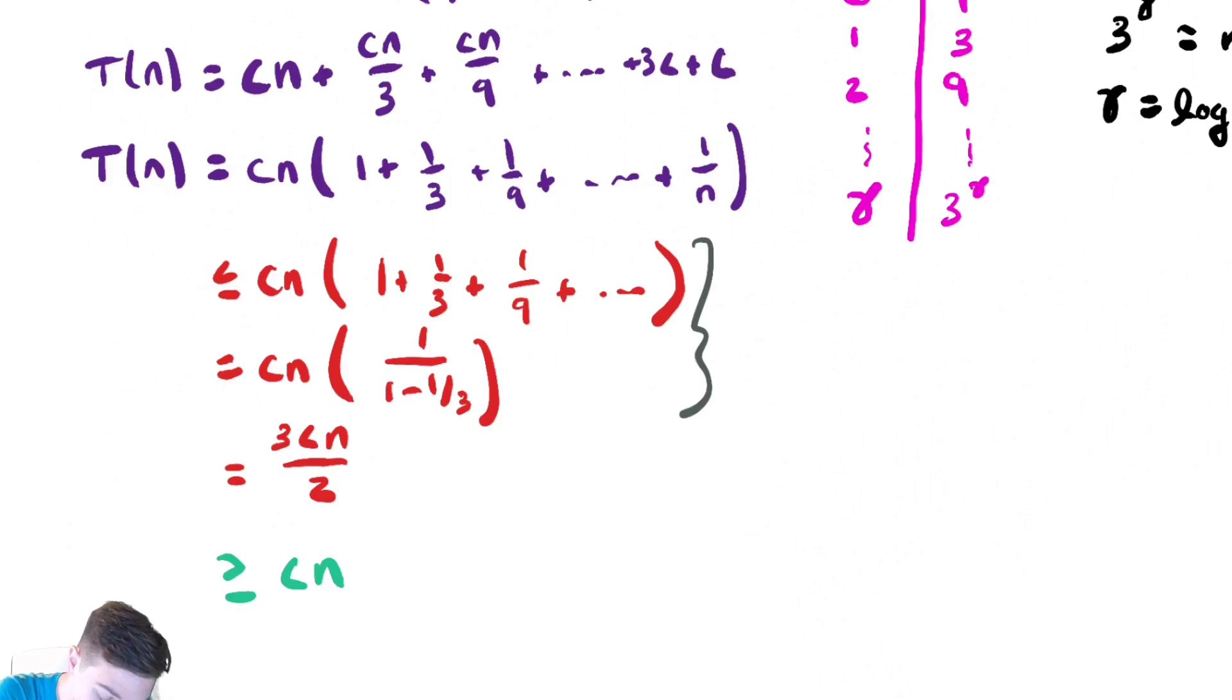So this stuff here says that it is in big O of n. This tiny bit of work here says that it is in big omega of n. Therefore, with those two facts combined together, it must be in theta of n.